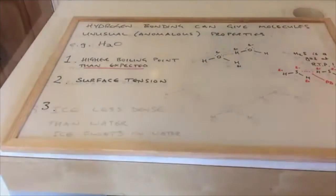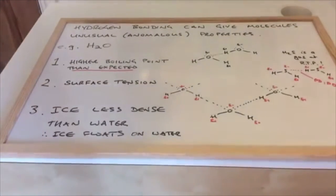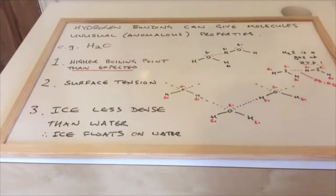The third and final anomalous property of water is that ice is less dense than water. In other words, ice floats on water, and that's because when ice forms the hydrogen bonds - once you get past or below 4 degrees Celsius, water has actually reached its maximum density - and the hydrogen bonds start to extend and